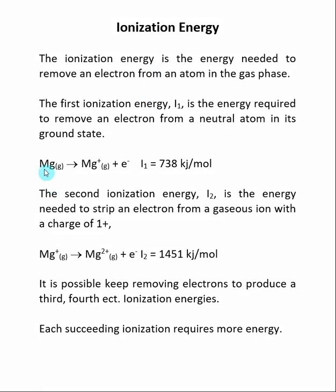Here we see an example of an ionization, where magnesium neutral has an electron removed from it to make magnesium plus, and notice it's in its gas state. I1 is listed as the amount of energy caused for this to happen.